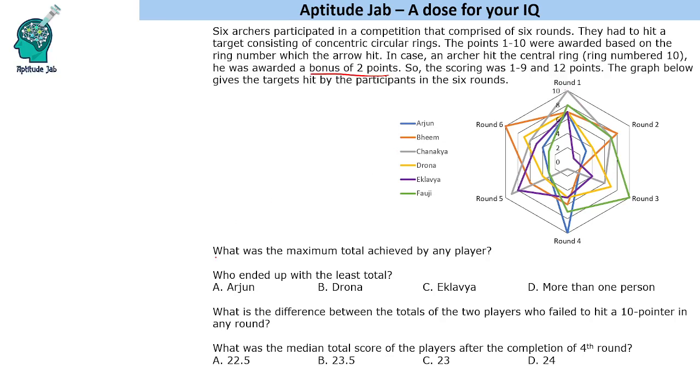If we see the questions, they ask: what was the maximum total achieved by any player? Who ended up with the least total? What is the difference between the totals of the two players who failed to hit a 10 pointer in any round? What was the median total score of the players after the completion of the fourth round?